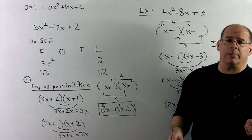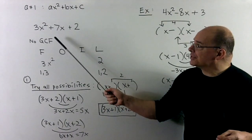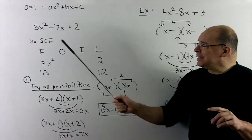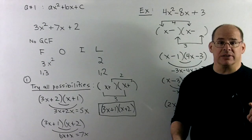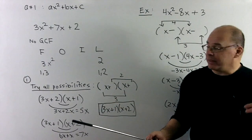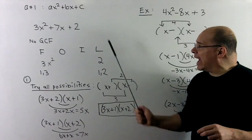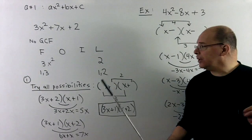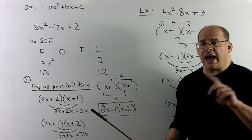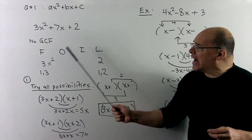Now, what do we do when the lead term is not x squared? For instance, 3x squared plus 7x plus 2 — we can't pull out a greatest common factor. The answer will look like x plus, x plus, but with something in front of the x's. To get to 3x squared, the only way to multiply two things to get 3 is 1 and 3. For the last term of 2, the only factoring is 1 and 2. We'll try to put 1 and 3 in the first slots and 1 and 2 in the second slots, getting the outside plus inside to equal 7x.